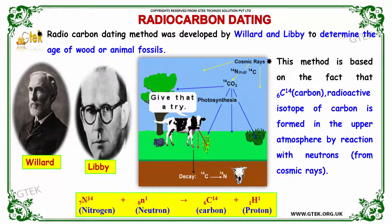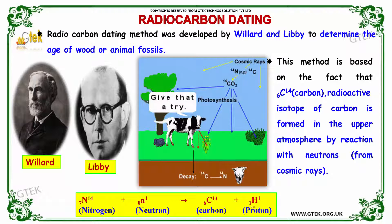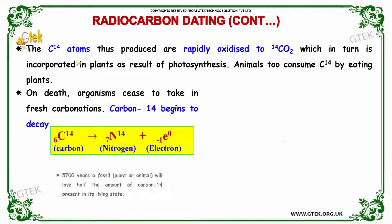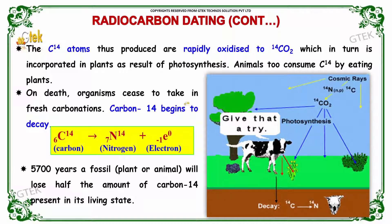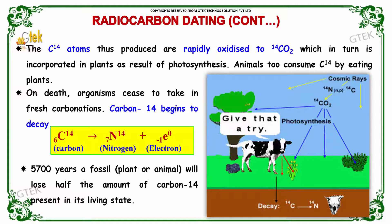You are able to see that nitrogen-14 with a neutron provides carbon-14 and a proton. The carbon-14 atoms thus produced are rapidly oxidized to carbon dioxide, as you can see here, which in turn is incorporated in plants as a result of photosynthesis. Animals also consume carbon-14 by eating the plants.